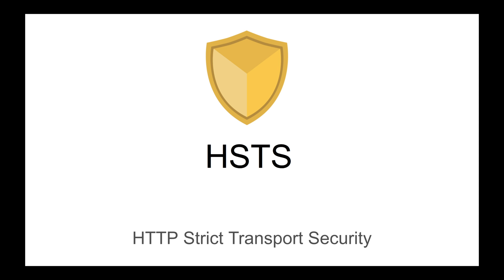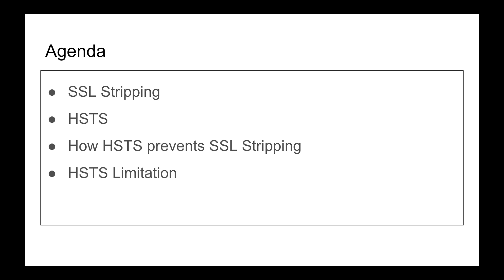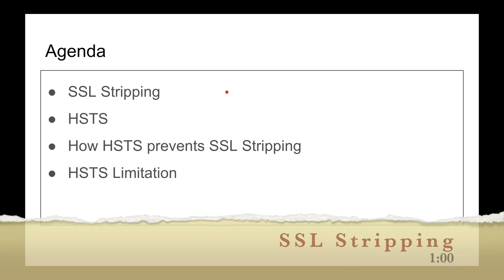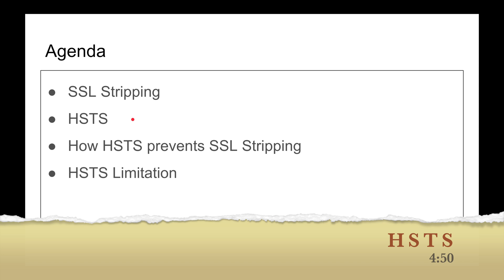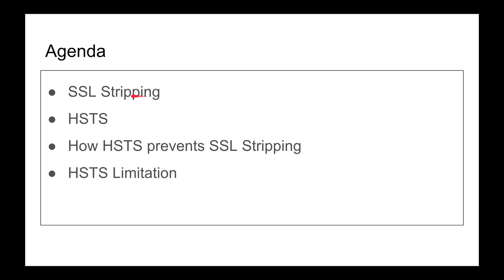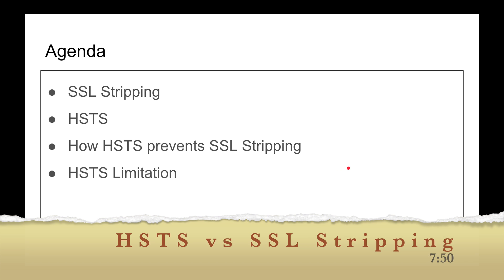HTTP Strict Transport Security, or HSTS for short, is a mechanism to force clients to communicate in HTTPS with a web server if both support that protocol. In this video, I want to cover: what is HSTS, what attack forced us to invent this technology — which is SSL stripping, or TLS stripping in the modern world — and how HSTS can prevent SSL stripping.